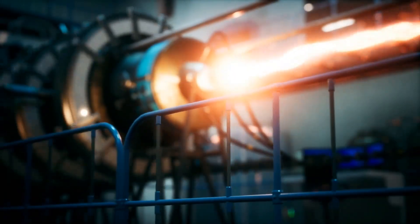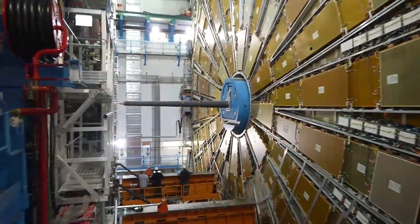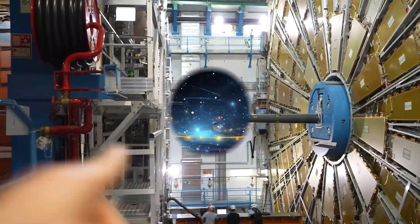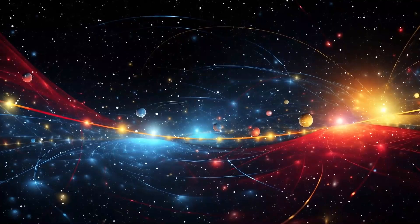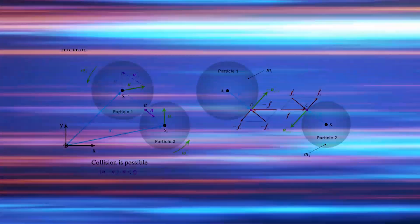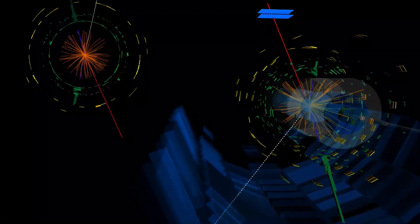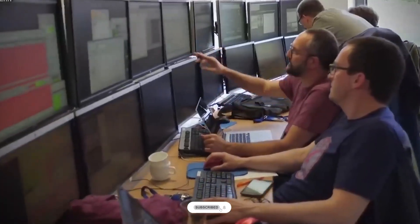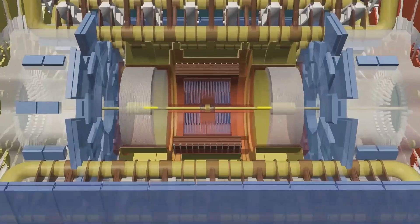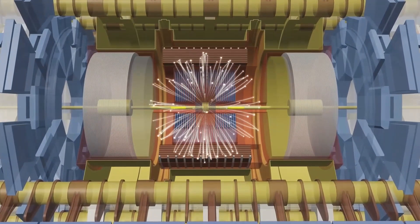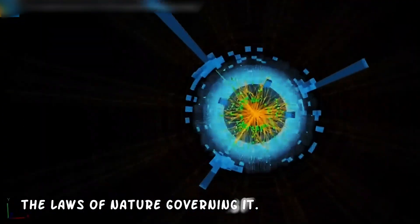A collider is a type of particle accelerator that brings two opposing particle beams together, such that the particles collide. In particle physics, colliders, though harder to construct, are a powerful research tool because they reach a much higher center of mass energy than fixed target setups. Analysis of the byproducts of these collisions gives scientists good evidence of the structure of the subatomic world and the laws of nature governing it.